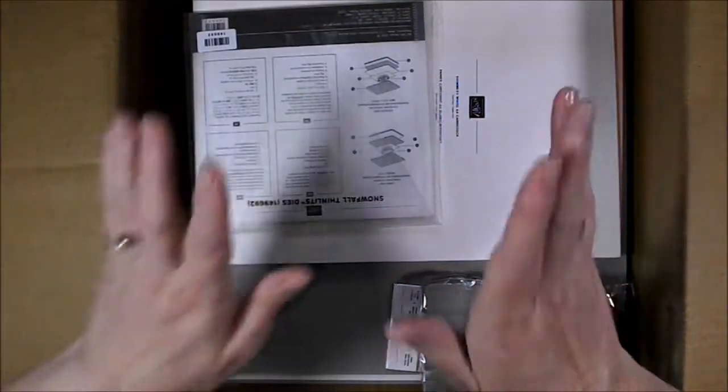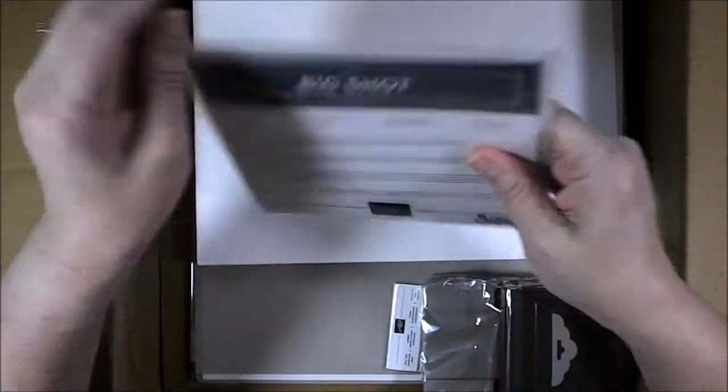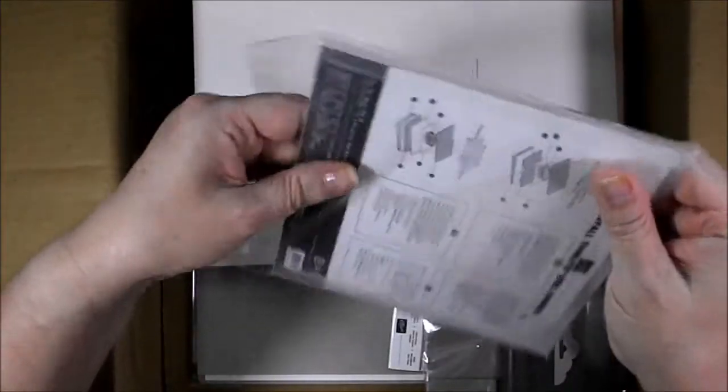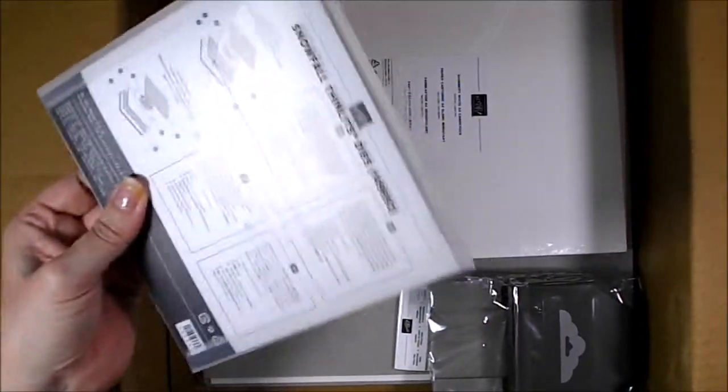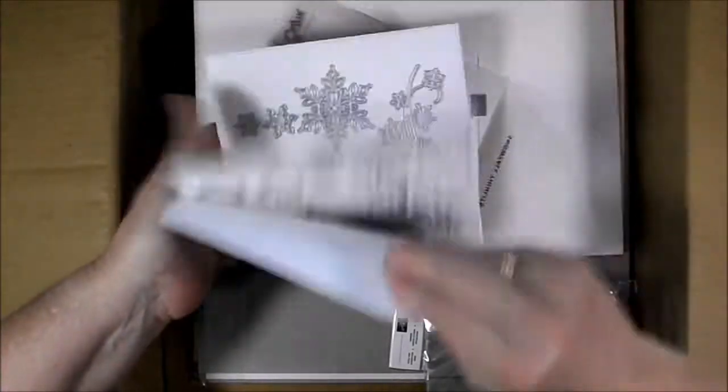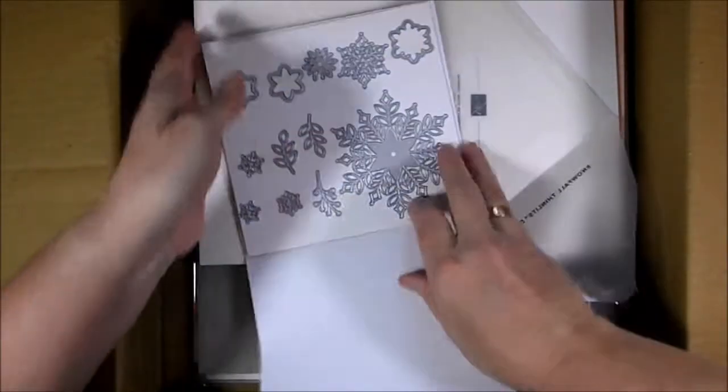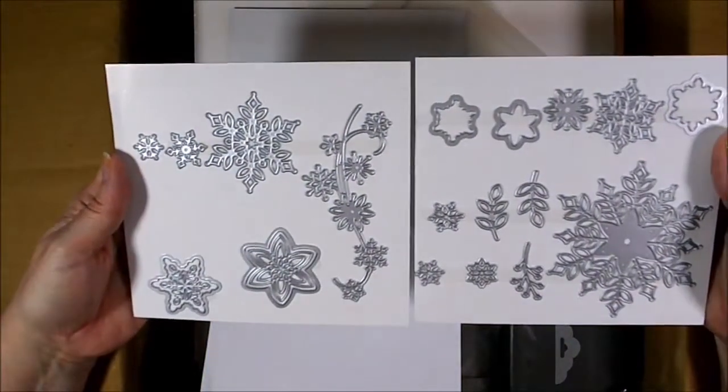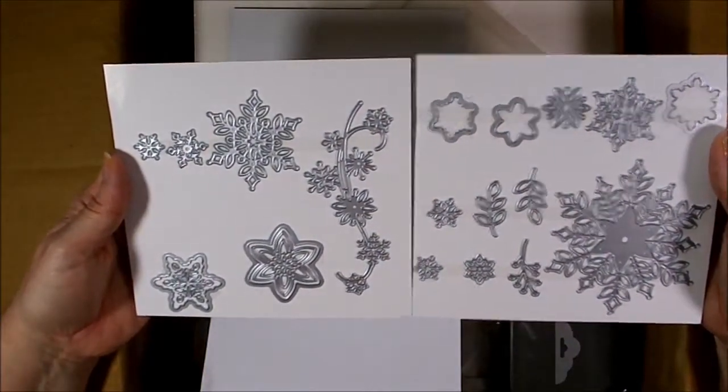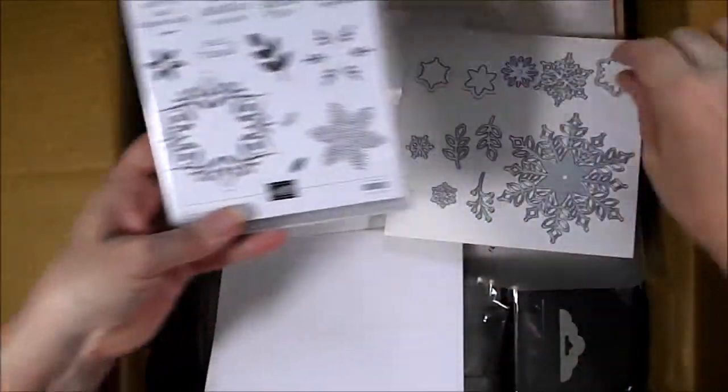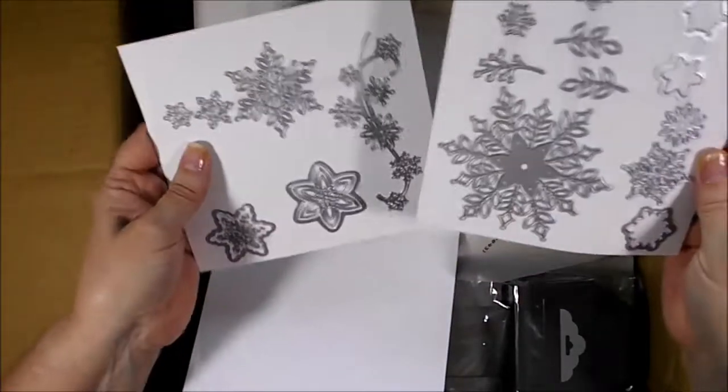Now these are the Snowfall Thinlits—these are actually part of the limited edition. Sorry, I'm all over the place with the unboxing, but it's just as they come out of the box. Now I believe this is two 6x6 cards—yes, there we go. Look at all of those. Some of them will match these and some won't. Some will match the others, and some of them are actually standalone.